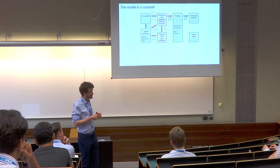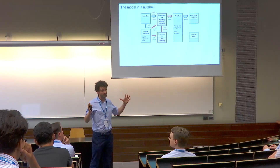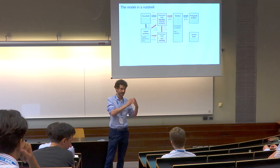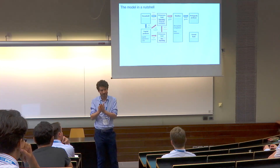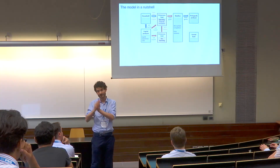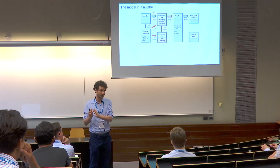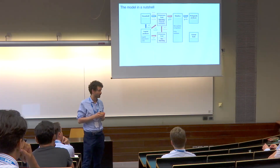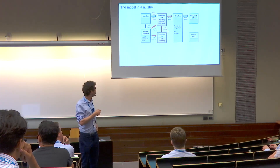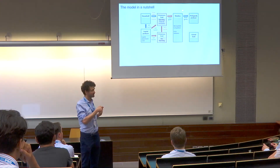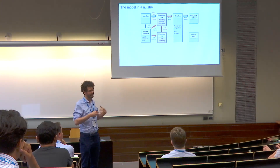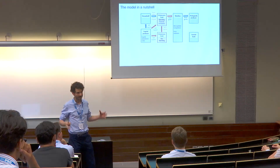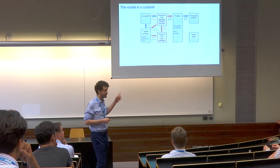This continuum of entrepreneurs splits into two groups. Some are constrained and operate at maximum scale according to the leverage constraint. Others are not constrained — and in fact with constant returns to scale they will not be producing at all; instead they lend their capital to the more productive entrepreneurs. So the most productive constrained guys get capital from the household, from less productive entrepreneurs, and from their own net worth.